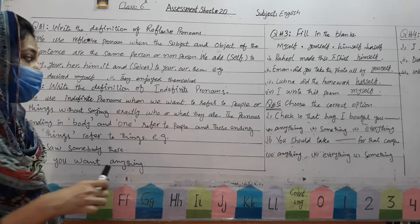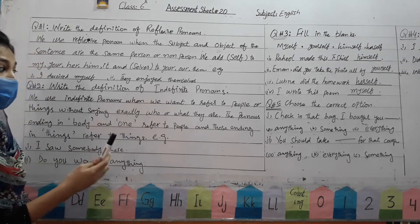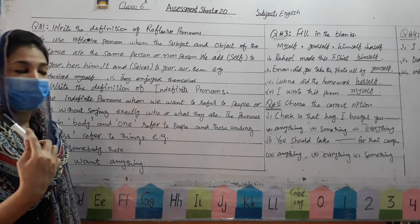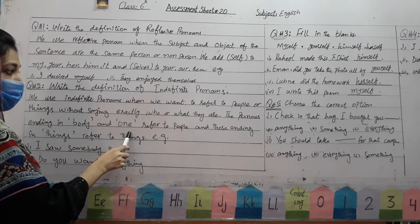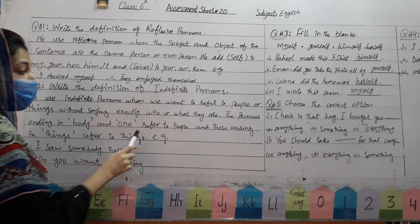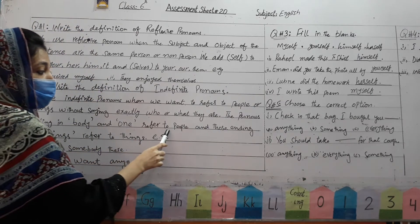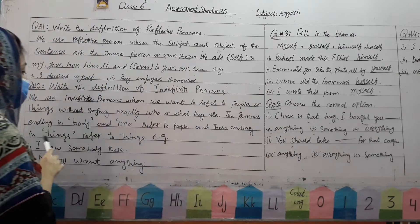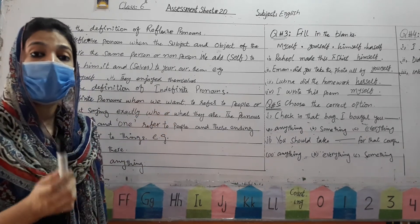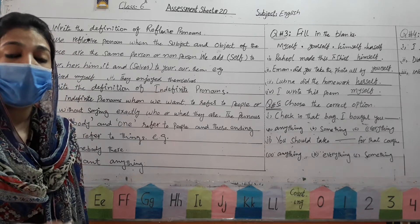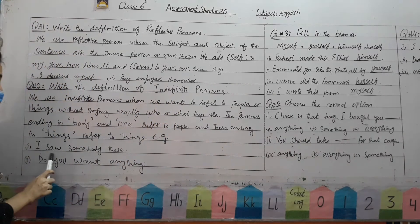Pronouns ending in 'body' and 'one' refer to people, and those ending in 'thing' refer to things. For example, your indefinite pronouns include: somebody, nobody, anything, something, everybody — these are all indefinite pronouns. For example: I saw somebody there.